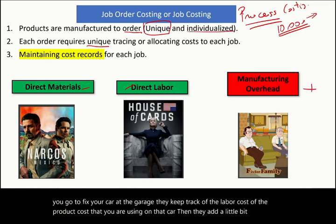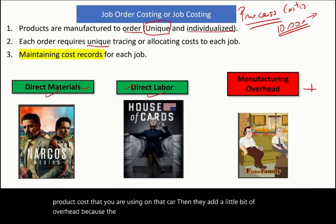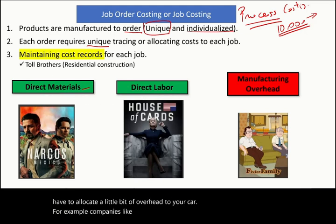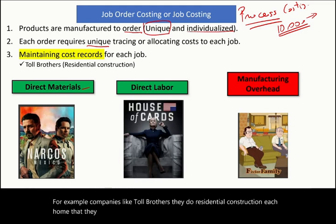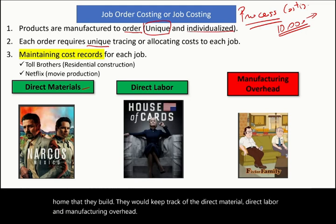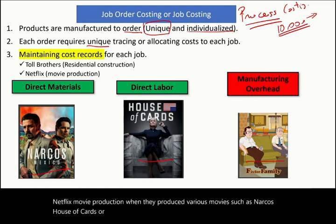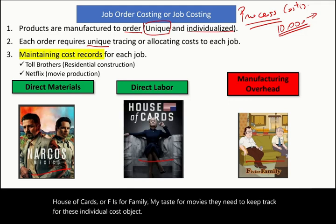They add a little bit of overhead because cost is composed of direct material, direct labor, and overhead allocated to your car. For example, companies like Toll Brothers do residential construction — for each home they build, they keep track of direct material, direct labor, and manufacturing overhead. Netflix, in movie production, when they produce various movies such as Narcos, House of Cards, or F is for Family, they need to keep track of the individual cost object for each job separately.